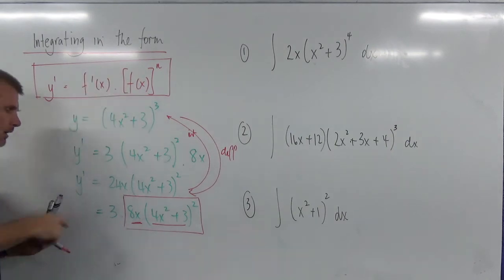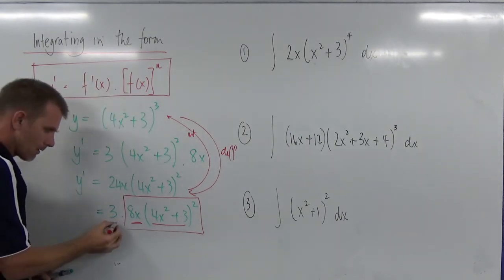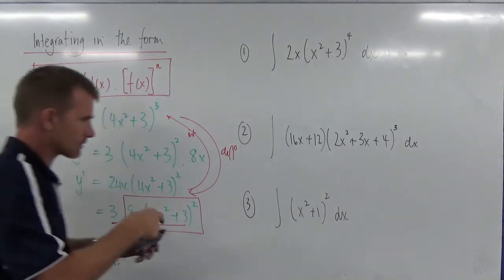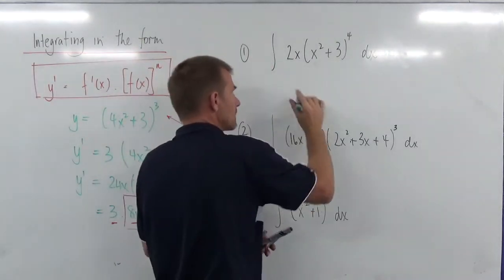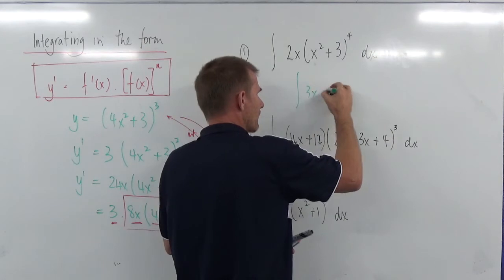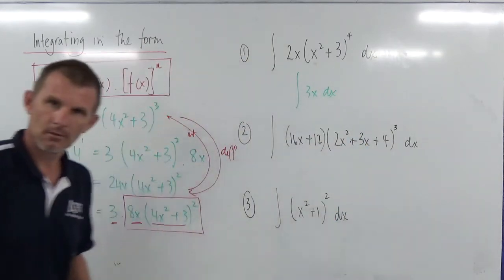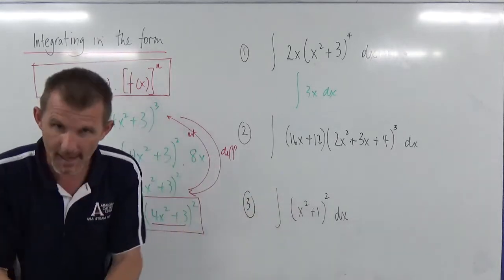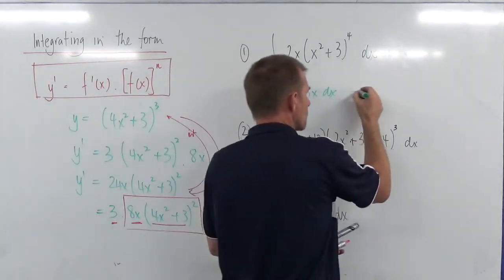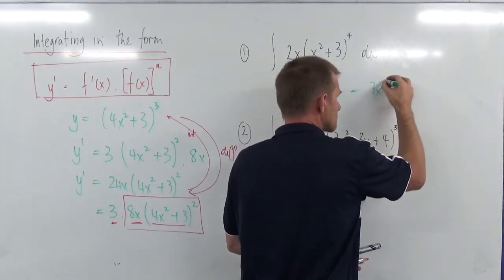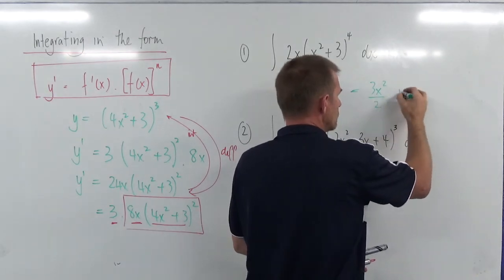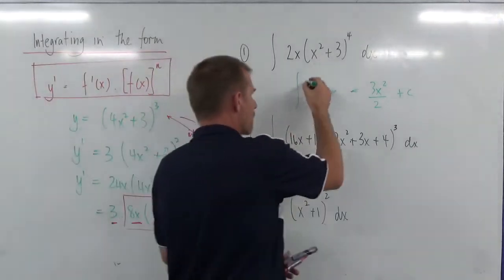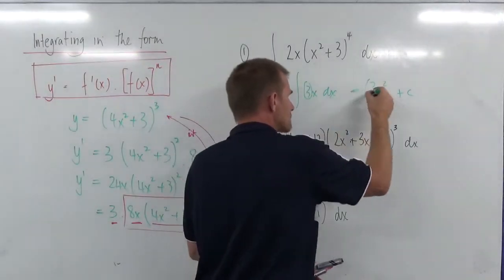Now remember — if I was to integrate something like ∫3x dx, you don't integrate the 3, you're only integrating the x term. So this would become 3 · x²/2 + c. You never integrate the 3, it just stays the same.